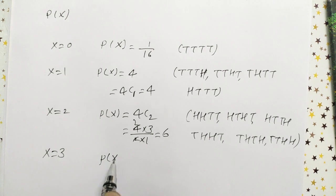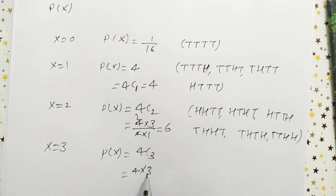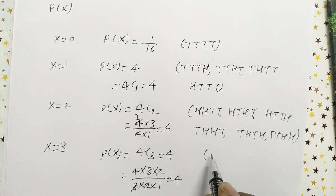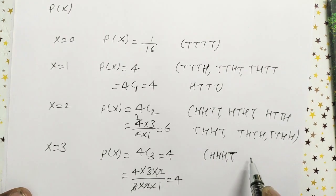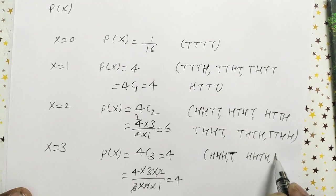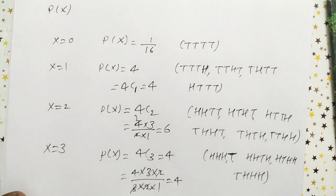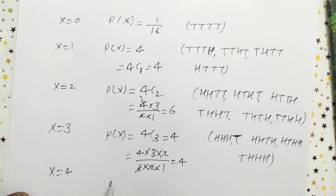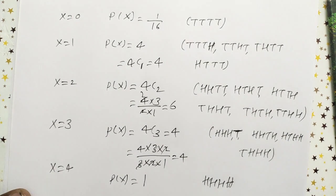When X equals 3, three heads appear. P(X=3) = 4C3 = (4×3×2)/(3×2×1) = 4. The outcomes are: head head head tail, head head tail head, head tail head head, tail head head head — four outcomes. When X equals 4, all four heads: head head head head — only one outcome, P(X=4) = 1/16.